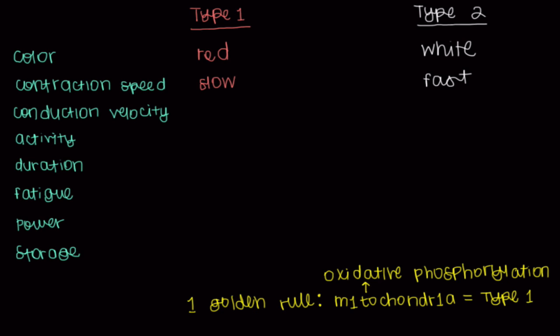What about the conduction velocity? How quickly are we going to be able to receive a neuronal impulse or a nerve signal to type 1 muscle fibers to contract? This is also going to be slow. And the term here is called slow twitch. And I remember that the same way I remember that the contraction speed is slow in type 1 muscle fibers. On the flip side, we call type 2 muscle fibers fast twitch muscle fibers.